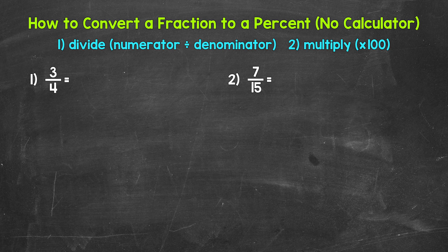And remember, a quick way to multiply by 100 is to move the decimal twice to the right. So we go from a fraction to a decimal, and then that decimal to a percent.